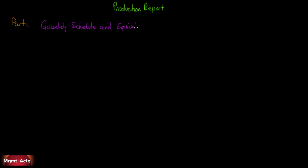Let's have a final review look at the entire production report, with all three parts sequentially presented. Part one of the production schedule is what's called the quantity schedule and equivalent units. Here we're really concerned with just units — no dollar signs enter the picture in part one. There are two broad categories: units to be accounted for, and units accounted for as follows.